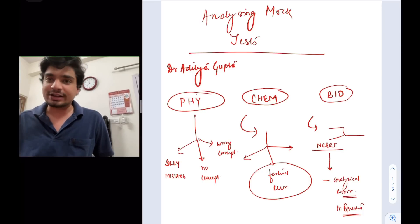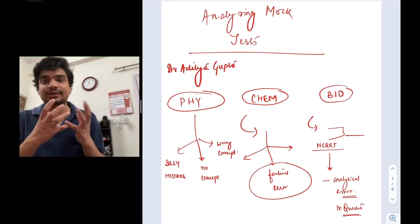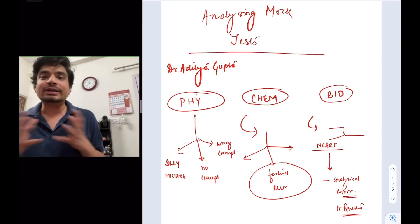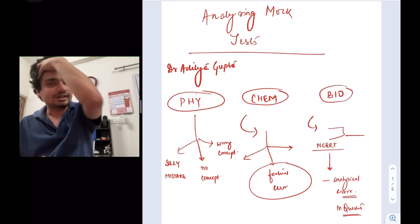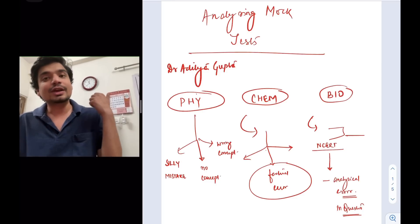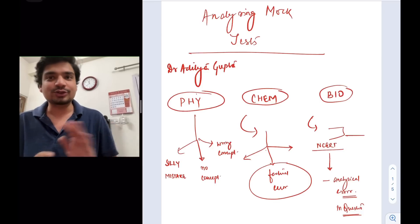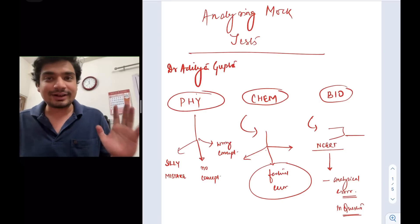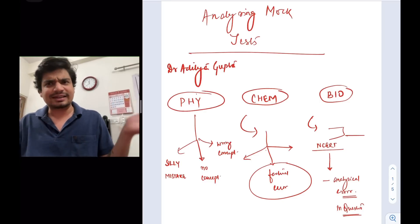So every subject has a different strategy and I'll start with physics and chemistry, especially as far as the concepts is concerned. I can broadly group the mistakes into three categories. Obviously, there will be other types of mistakes as well. First is a silly mistake. You know these questions, you understand the concepts of these questions. You will definitely arrive at a right answer when you are in a relaxed state probably.